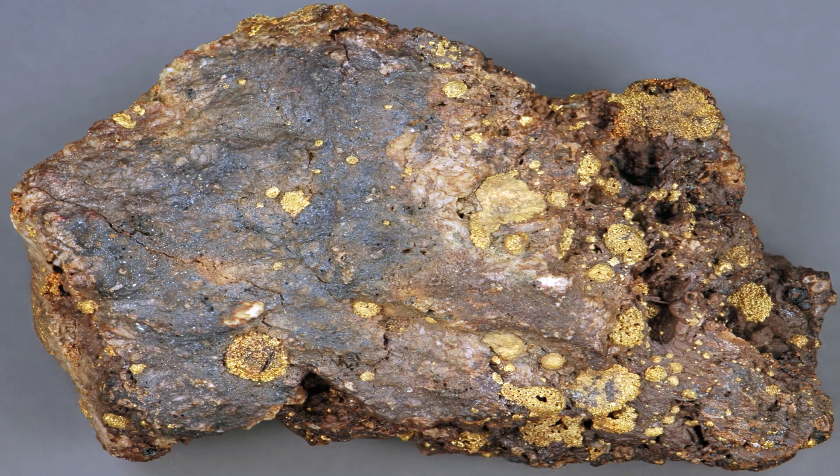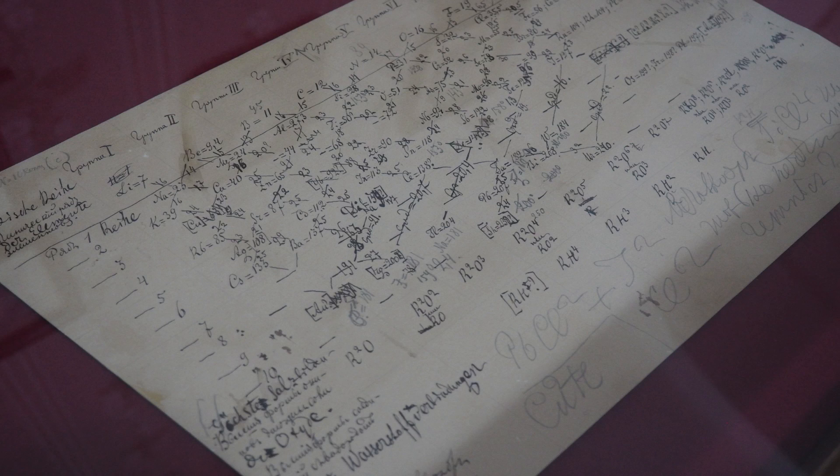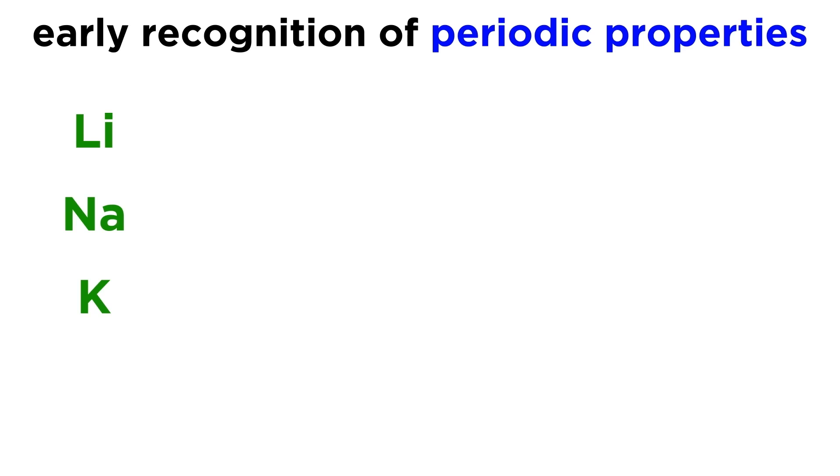In the mid-19th century, chemists were working to purify different metal ores, and in the process they discovered several new elements. There was much effort put forth towards organizing all the known elements into a table that could explain their properties.